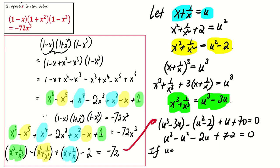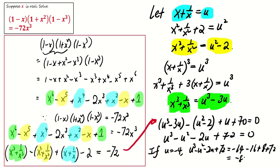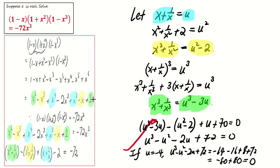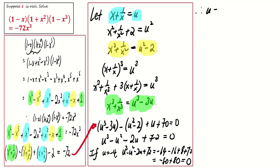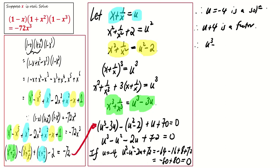If u equals negative 4, then u cubed minus u squared minus 2u plus 72 equals negative 64 minus 16 plus 8 plus 72, which is negative 80 plus 80, equal to 0. This means u equals negative 4 is a solution, and therefore u plus 4 is a factor.